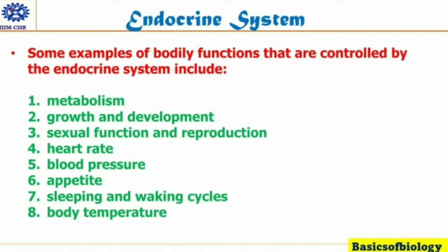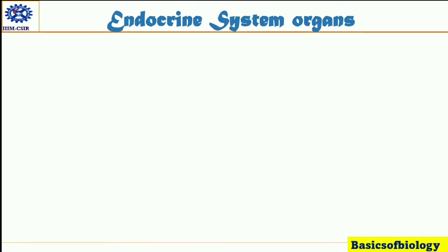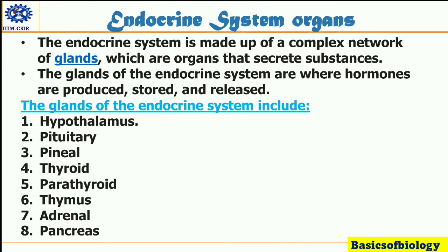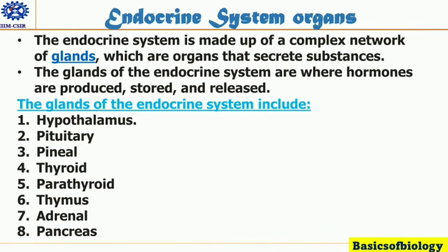Sometimes glands produce too much or not enough of a hormone. This imbalance can cause health problems such as weight gain, high blood pressure, and changes in sleep, mood, and behavior. Many things can affect how your body creates and releases hormones — illness, stress, and certain medications can cause a hormone imbalance.